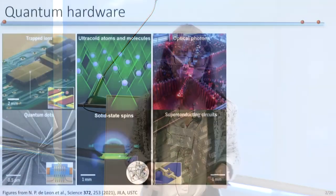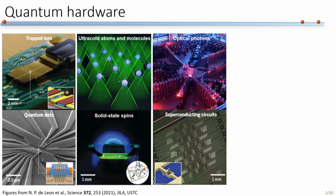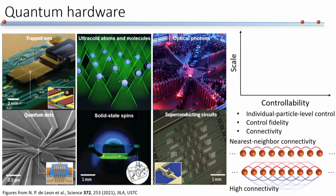At this quantum summit we've heard a lot of exciting progress centered on quantum hardware, on AMO systems as well as solid state systems. For most platforms, we can lay them on a scale versus controllability chart. For scale, I mean the number of qubits in the system. For controllability, I include not just individual particle level control, but also control fidelity as well as connectivity.